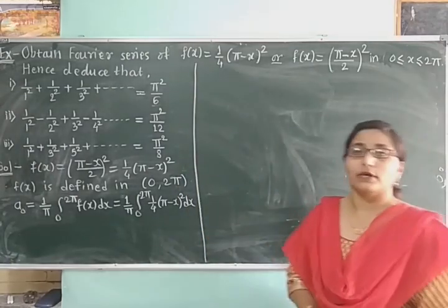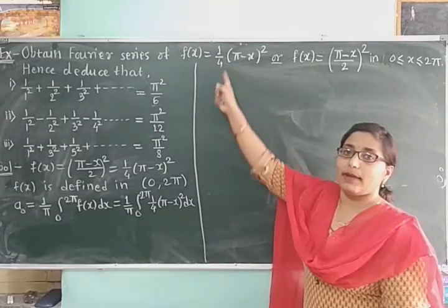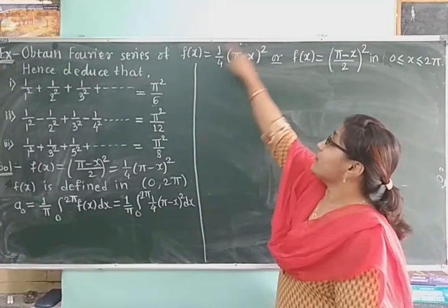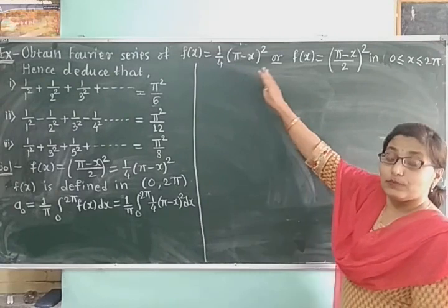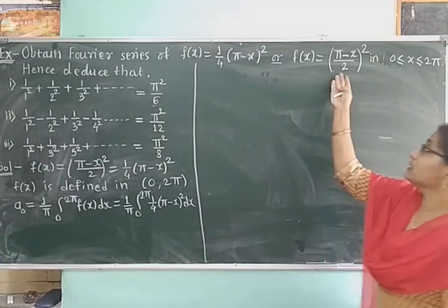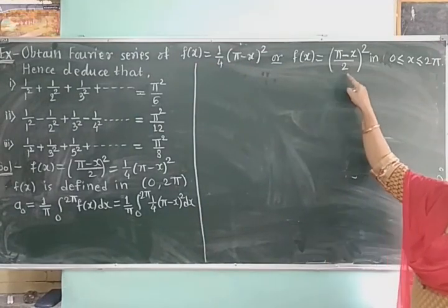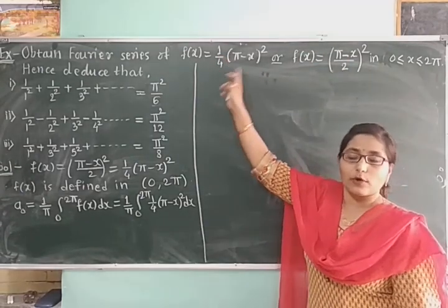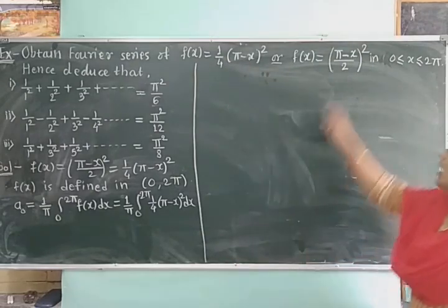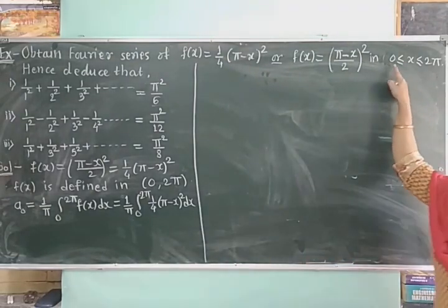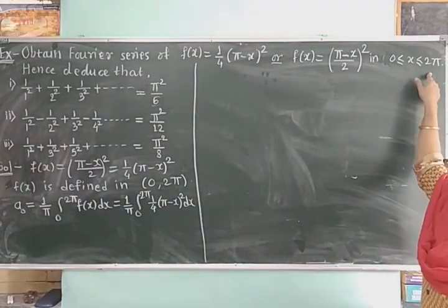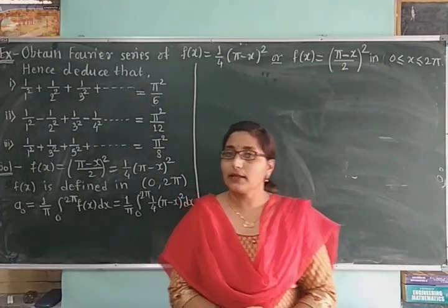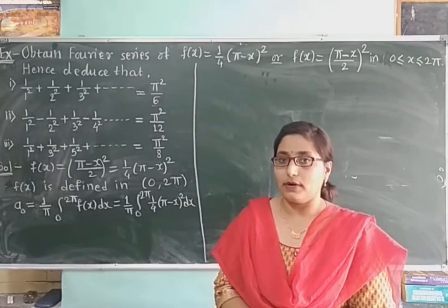Obtain the Fourier series of f(x) = (1/4)(π - x)², which can also be written as (π - x)/2 whole square. This is the same as (1/4)(π - x)². This function is defined on the interval 0 to 2π, so we have been given the full range.